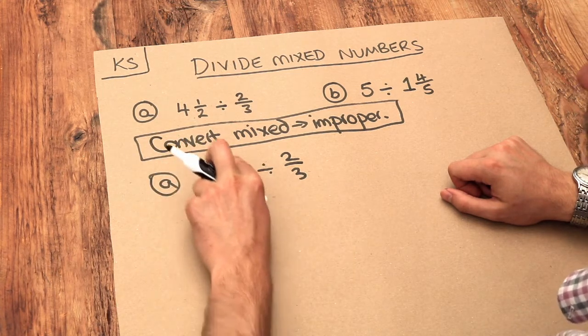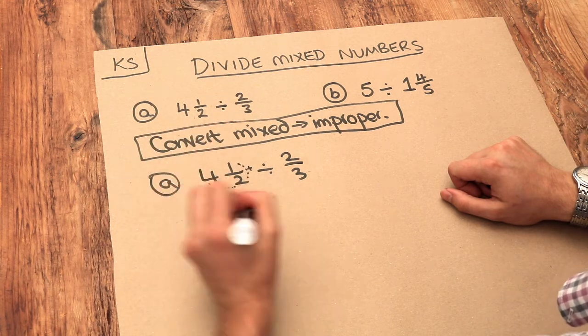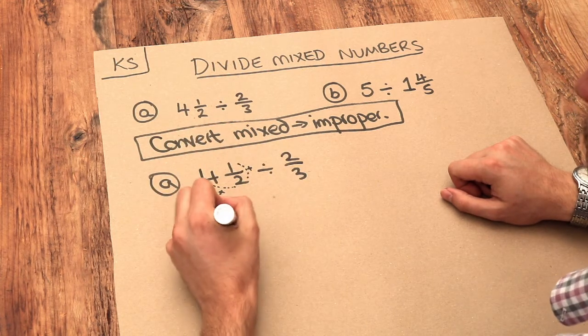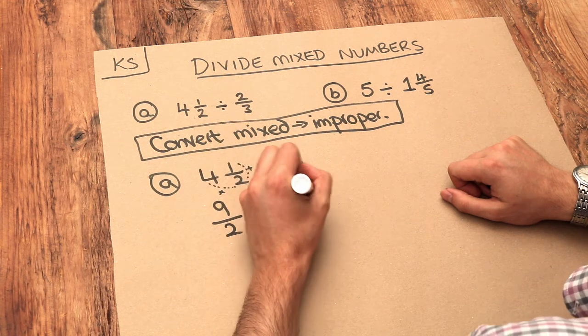So 4 times 2 is 8 plus 1 is 9, so it's 9 over 2, and we use the same denominator, so it's over 2, and then we're dividing by two-thirds.